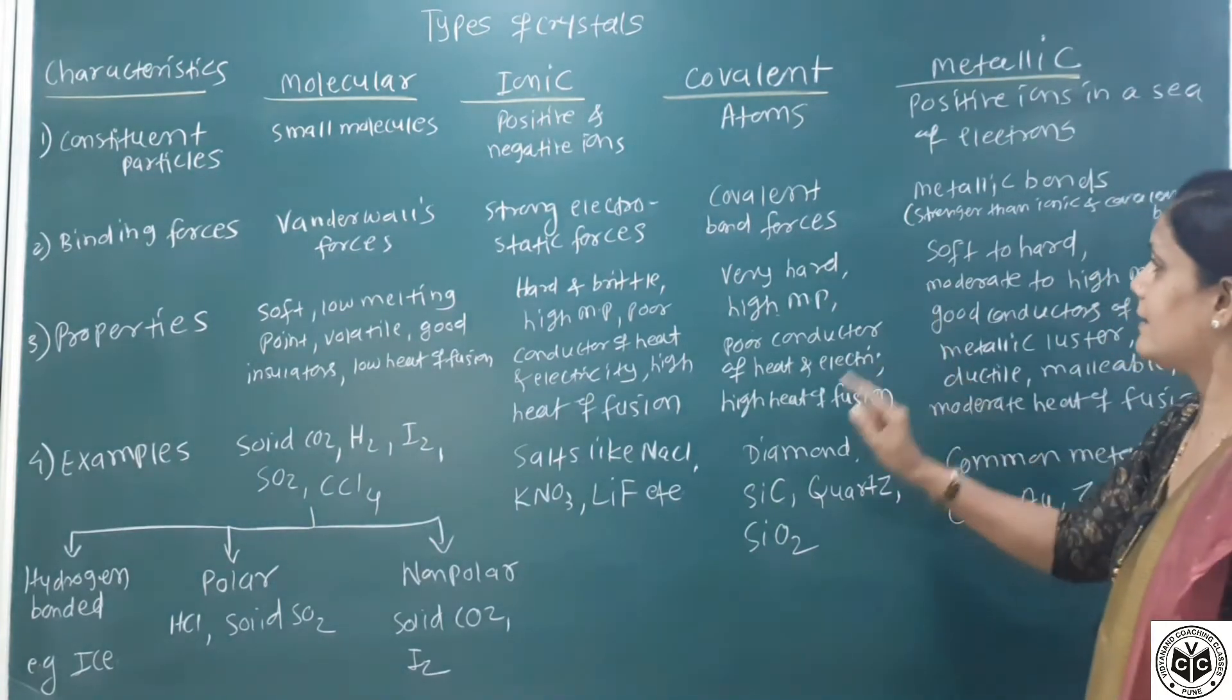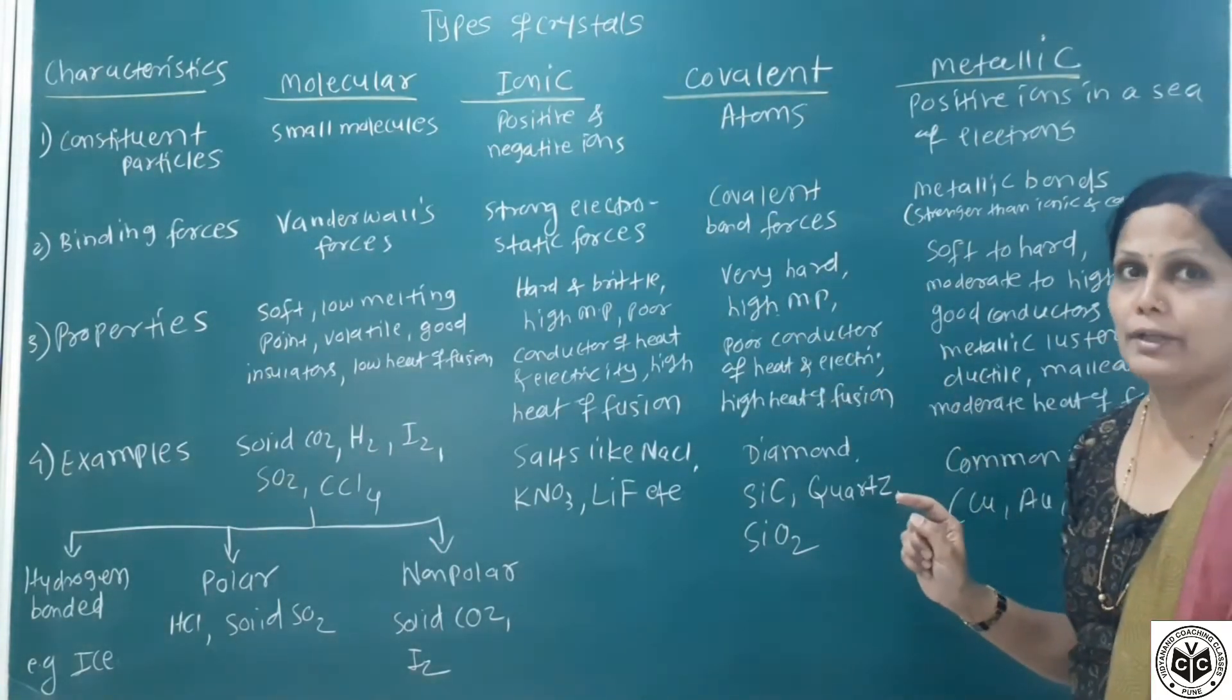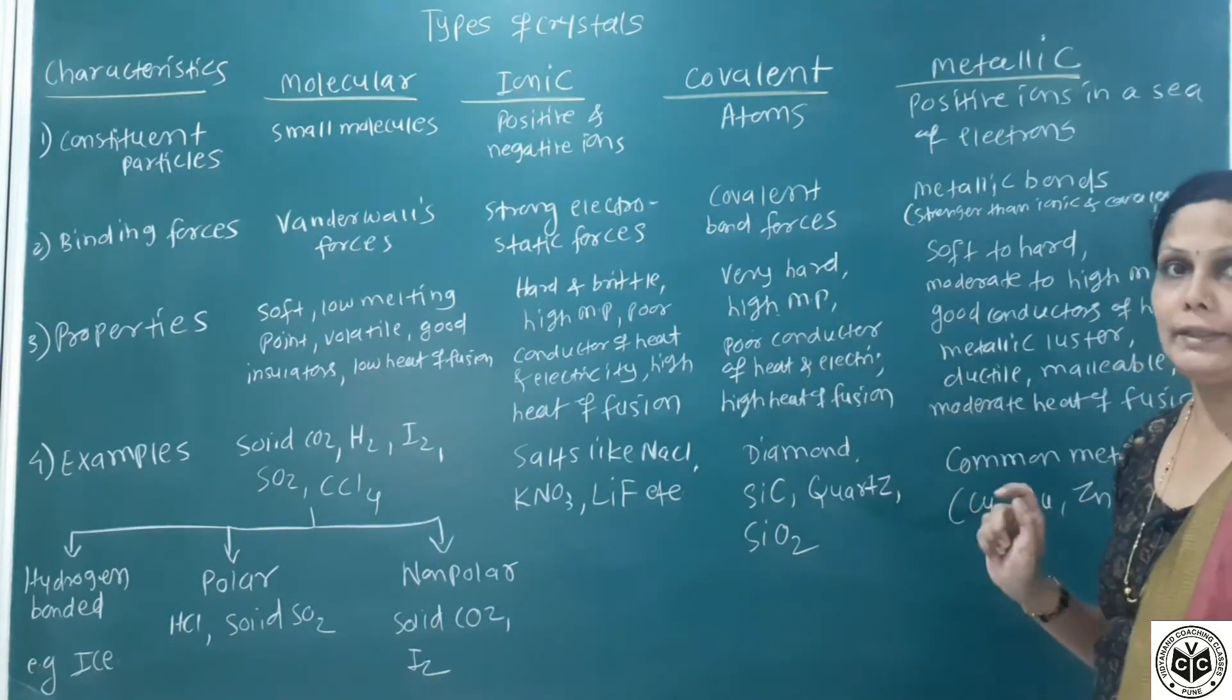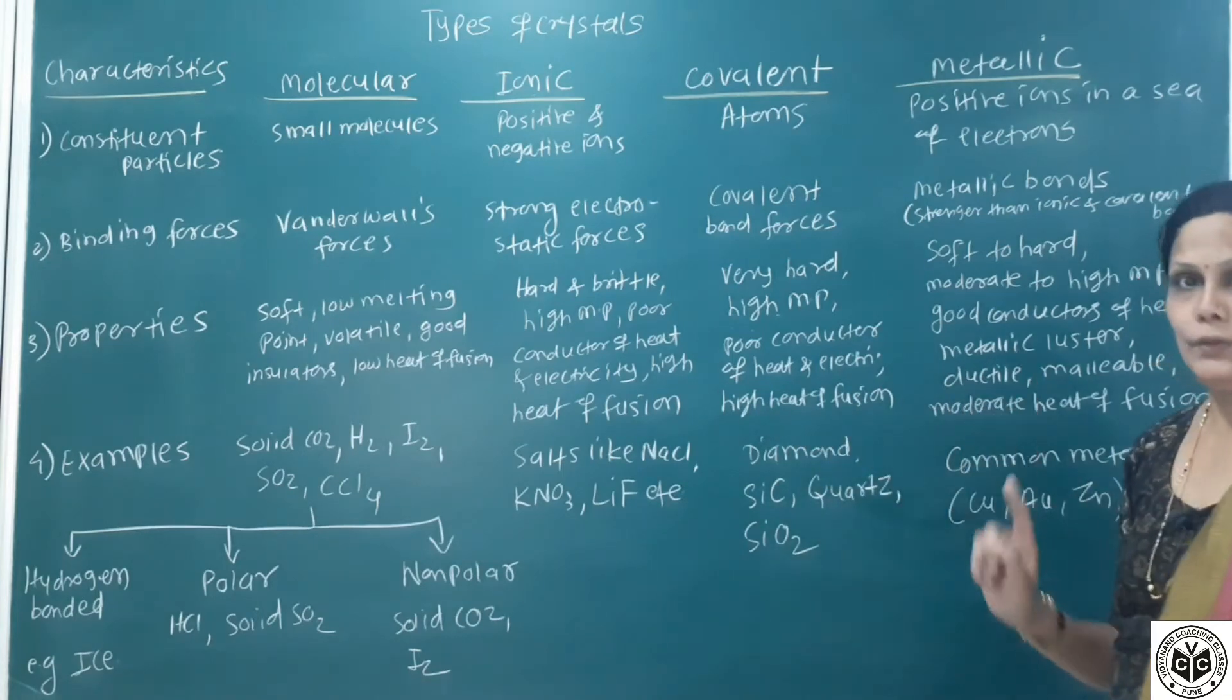Covalent solids have very high melting point because covalent bonds are stronger bonds, poor conductor of heat and electricity, and high heat of fusion.